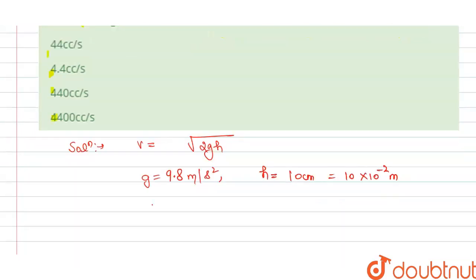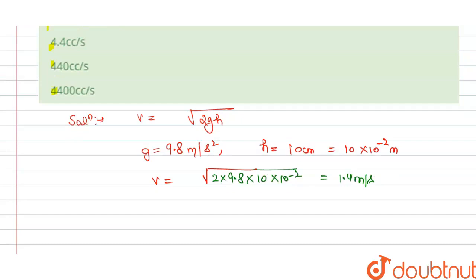So we have v equals square root of 2 and this is 9.8 and this is 10 into 10 power minus 2. From this we get v is 1.4 meter per second.